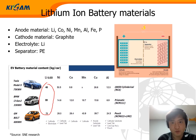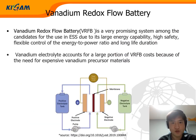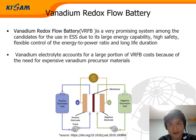We have a supply risk. Cathode material graphite is also very much needed. Vanadium redox flow battery is a very promising system among the candidates for use in ESS due to its large energy capability, high safety, flexible control of the energy-to-power ratio, and long life duration. But it has a fatal disadvantage: vanadium is too expensive. Vanadium costs account for almost half of VRFB costs.